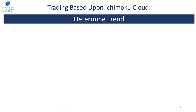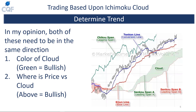The first thing you need to do is determine the trend — it is the most important step with Ichimoku. There are two ways to determine trend: the color of the cloud and where the price is relative to the cloud. Speaking in bullish terms: a green cloud is bullish, and a price closing above the cloud is bullish. In order to have a solid trend, both of these things must be true at the same time — you need a close above the green cloud.